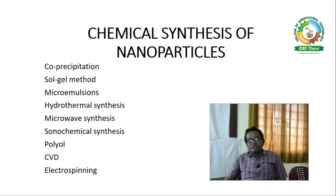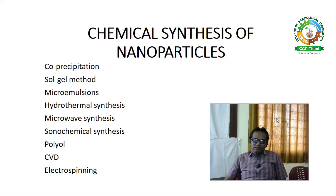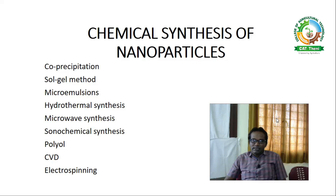Ostwald — spelled O-S-T-W-A-L-D — is a theory you may have studied at the plus-two level. Ostwald is a scientist, a chemist, who proposed that theory. The second principle in Ostwald ripening states that a change in the solubility of the particles leads to the formation of nanoparticles.